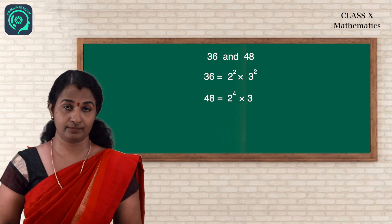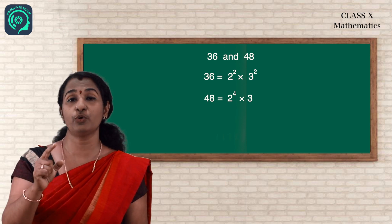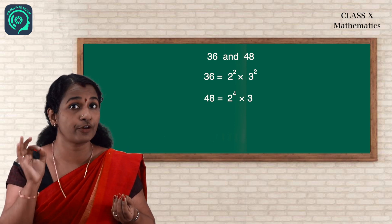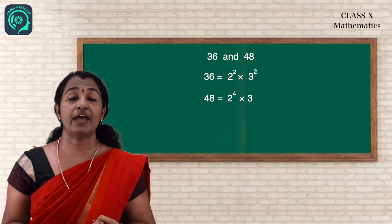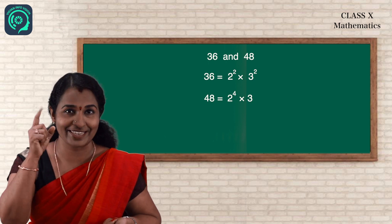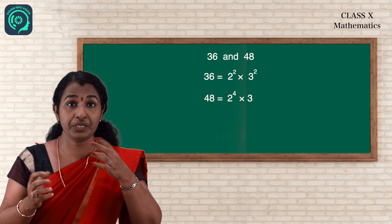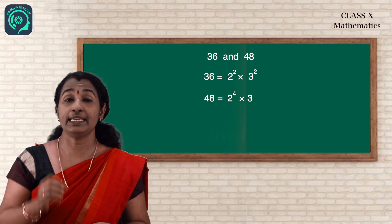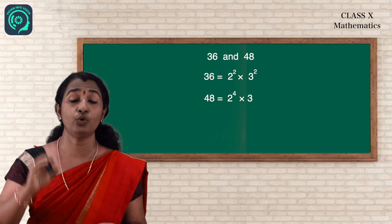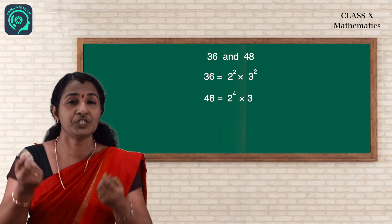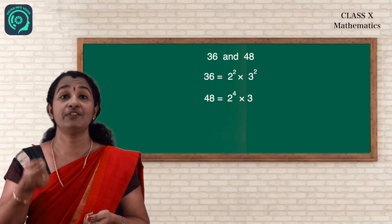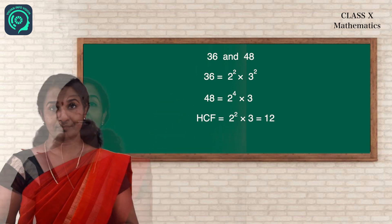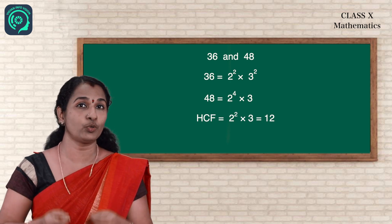When finding HCF, remember: you have to take only the common factors with the least power. Between 2² and 2⁴, the least is 2²; between 3 and 3², the least is 3. So HCF = 2² × 3 = 4 × 3 = 12.